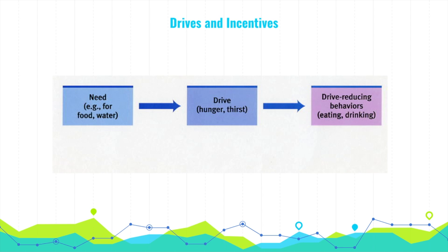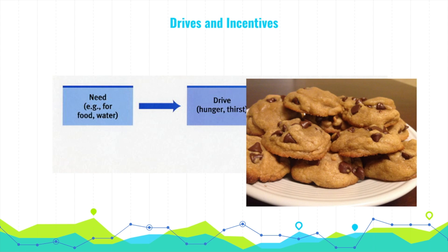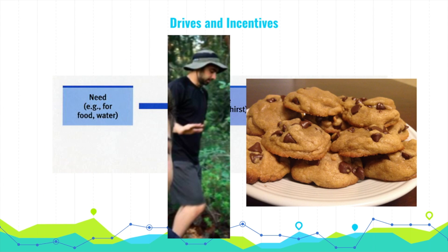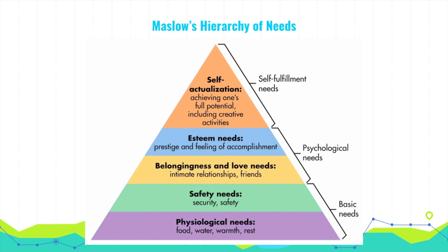If drives are a push, incentives are a pull. For example, if you smell freshly baked chocolate chip cookies coming from the kitchen, you'll probably walk over and check it out. Animals are also driven by a desire to learn and explore — we hunger for information in a similar way that we hunger for food. This brings us to Maslow's hierarchy of needs, which states that certain needs must be satisfied before others are addressed. In other words, if you're really hungry, you won't care about other higher-level needs.